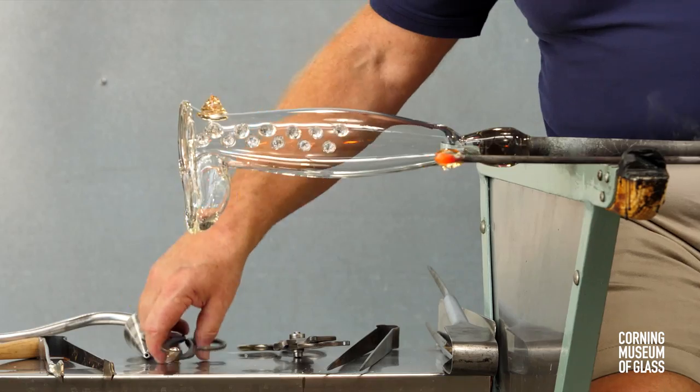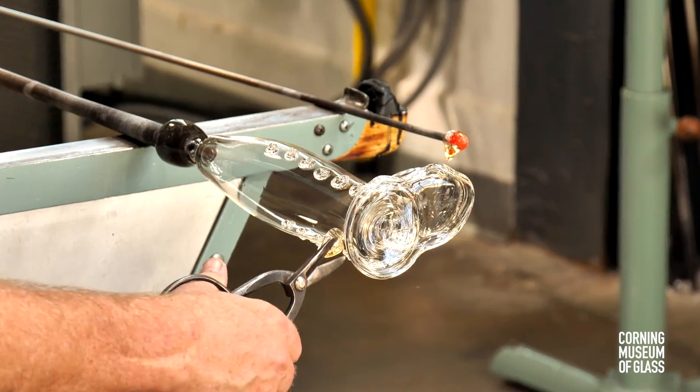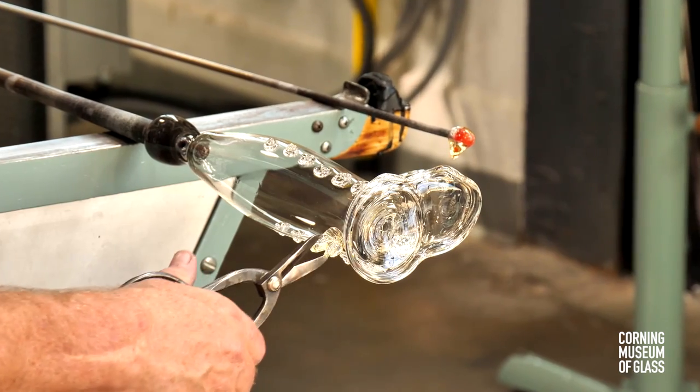The spur is made at the back of the boot by adding a small amount of glass, pressing it flat, and using the shears.